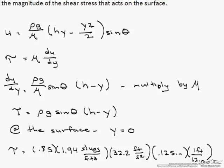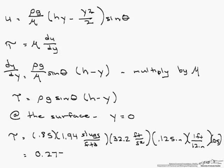And we multiply this by the sine of theta. In our case that's 30 degrees, and the sine of 30 degrees is 0.5. So when we put all of our calculations together, we find that the shear stress at the surface is 0.277 pound force per foot squared.